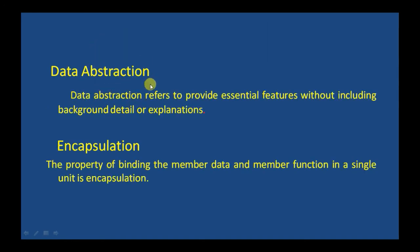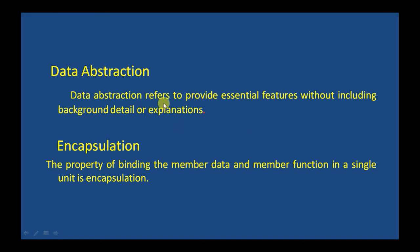Data abstraction is a feature to provide access to member data without showing the detail of the hidden data. Data abstraction refers to providing essential features without including background detail or explanation. The goal of abstraction is to isolate aspects that are important for some purpose and suppress aspects that are unimportant. Abstraction must always be for some purpose, because the purpose determines what is and what is not important.